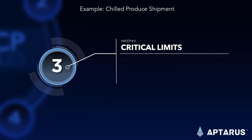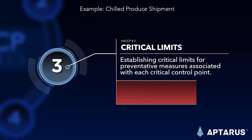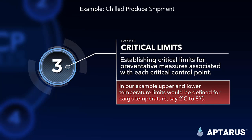Critical limits – establishing critical limits for preventative measures associated with each critical control point. In our example, upper and lower temperature limits would be defined for cargo temperature, say 2 degrees Celsius to 8 degrees Celsius.